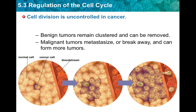Cancer cells form disorganized clumps called tumors. There are two major types. Benign tumors are typically clustered together, may be harmless, and may be cured by removal. If you have a benign tumor, you can have that part of your body removed through a surgical process and recover from cancer.